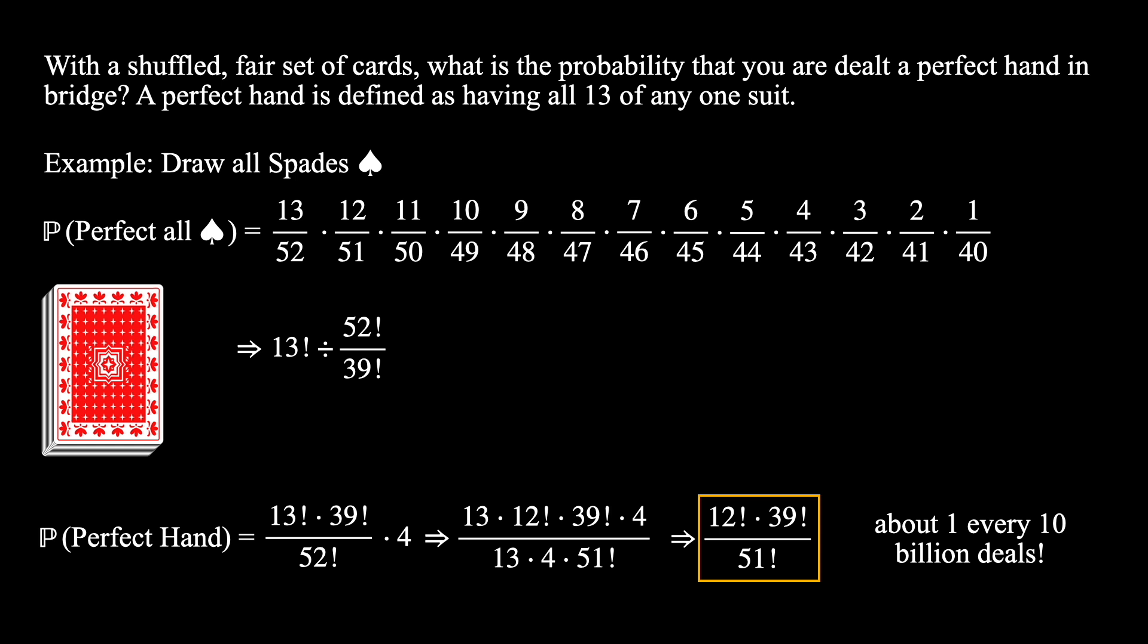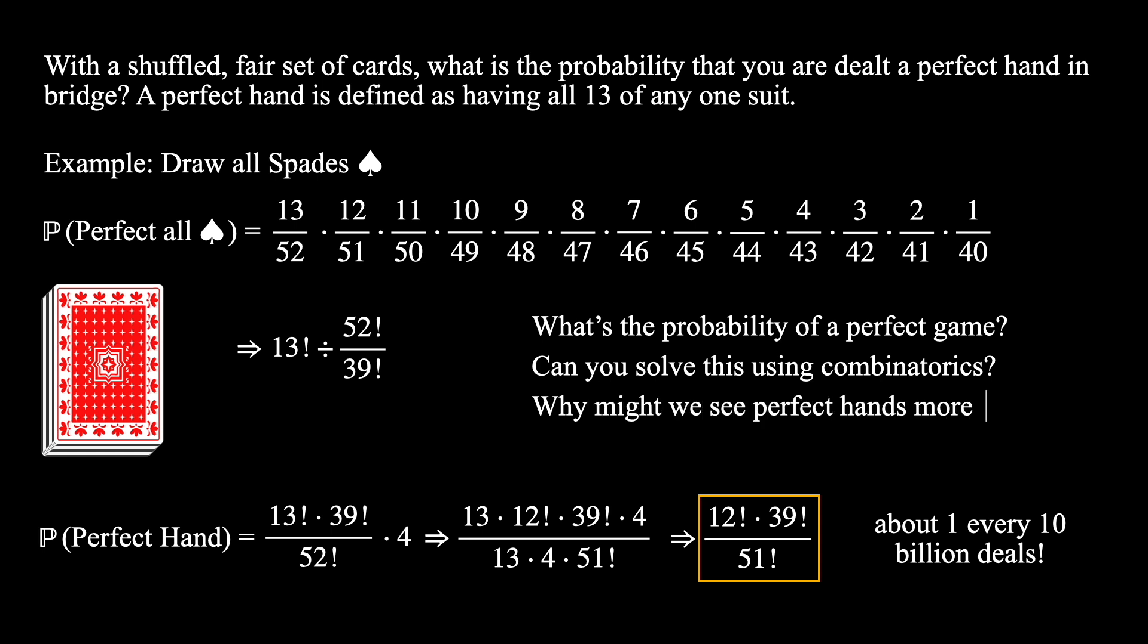This was a fun, albeit short, question. So I challenge you to make some extensions to the question. Try to find what's the probability of a perfect game where all 4 players are dealt a perfect hand. Another extension you could use is to try to solve this problem using combinatorics directly, instead of enumerating through every single draw. Finally, we often see reports of perfect hands in bridge in the news, and we just realize that a perfect hand only happens in about 1 of every 10 billion deals. So why might we see perfect hands more often in real life than this problem suggests? Think about the assumptions and biases that may play into the real world situation that this problem can't fully capture.